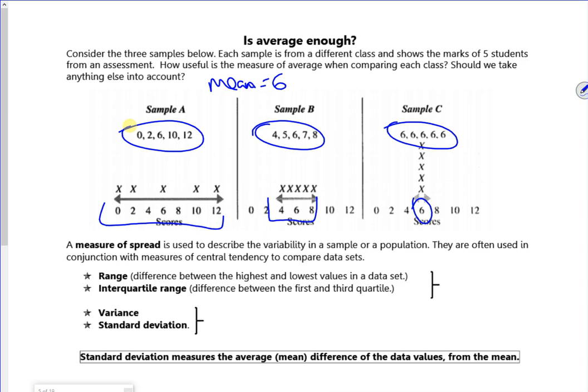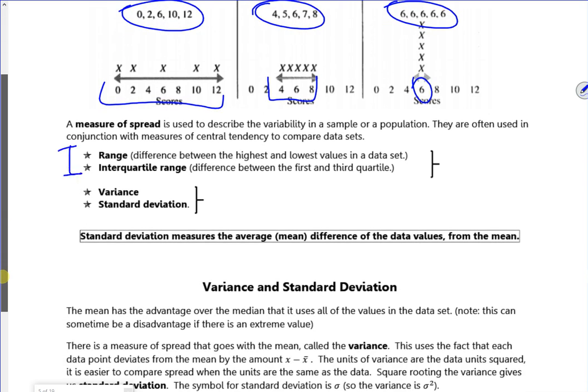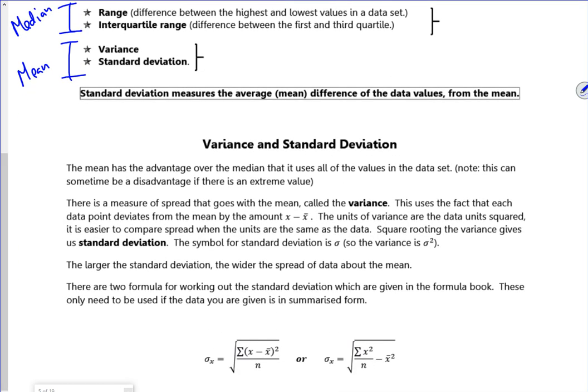Now at GCSE you did the range and the interquartile range and we tend to just use the median with that. We've got two more which used to be on GCSE, which is the variance and the standard deviation and we tend to use the mean when we're working with that. The variance and the standard deviation are kind of how far on average are you away from the average. We've got the variance which is without the square root and we square root it to give us the standard deviation.